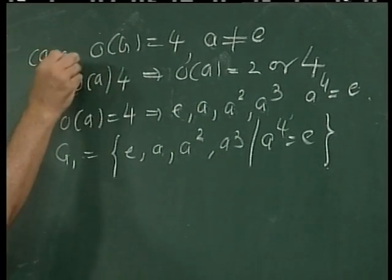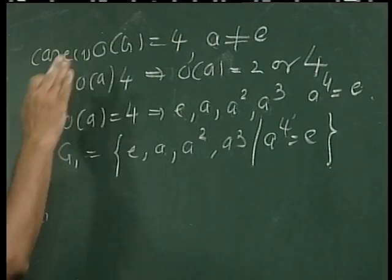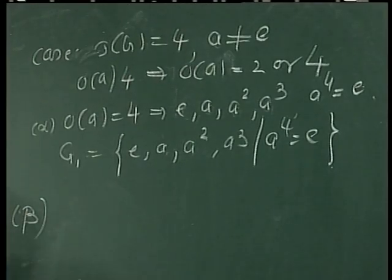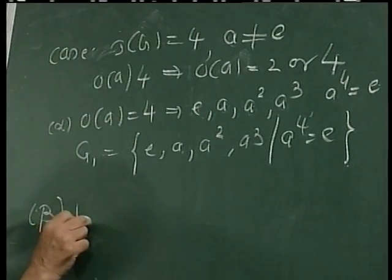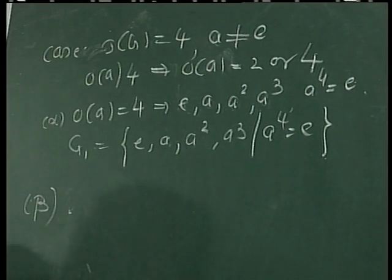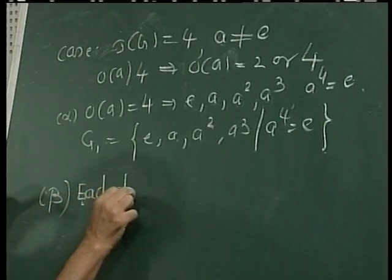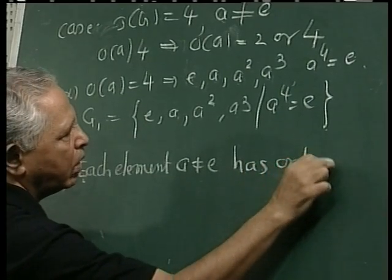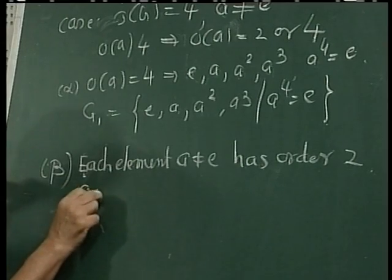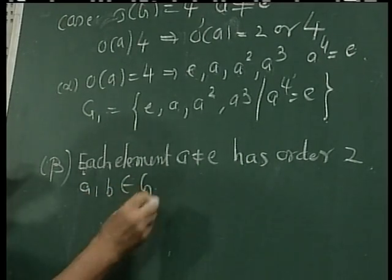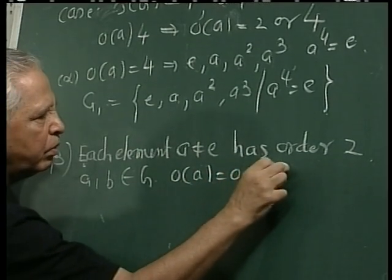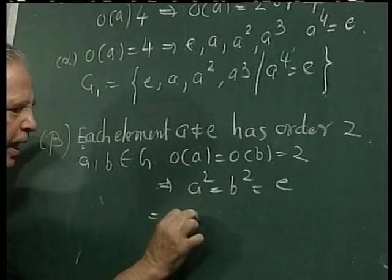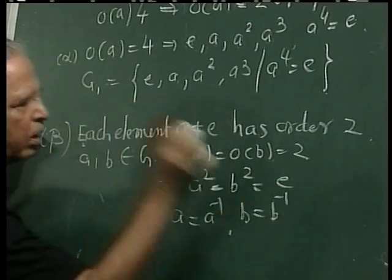This is case alpha. Now we take case beta. We assume that there is no element with order 4. That means each element a, different from e, has order 2. Let us take two distinct elements a and b, both belonging to G. Then order of a equals order of b equals 2. This implies a-squared equals b-squared equals e, and this implies a equals a-inverse and b equals b-inverse.